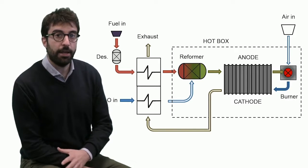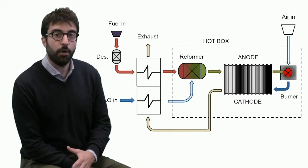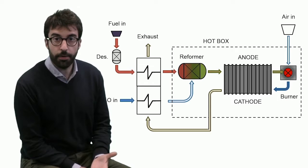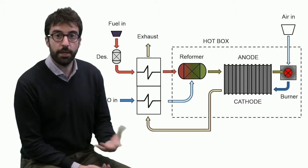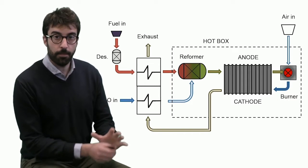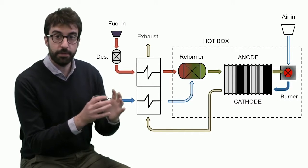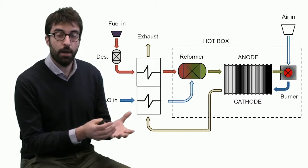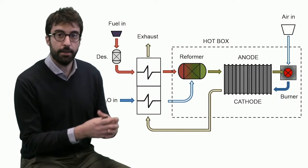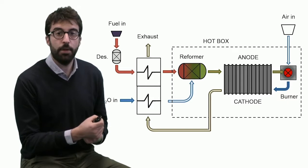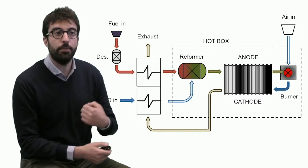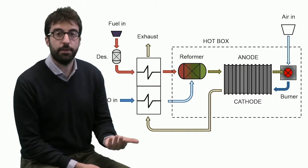In general, we can identify an area called hot box that involves all the high temperature operating systems: the reformer, the stack, and the burner. Usually we can optimize thermal equilibrium of these three components that improves the thermal stability, since for example the reformer is an endothermic reactor while the burner is an exothermic reactor. But what is required is very high quality optimization.